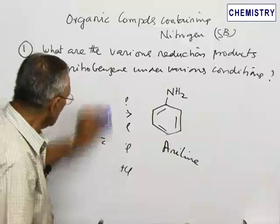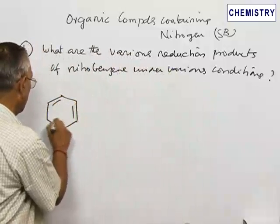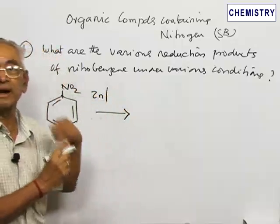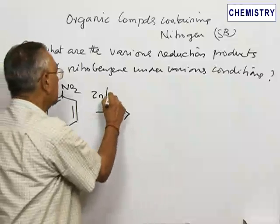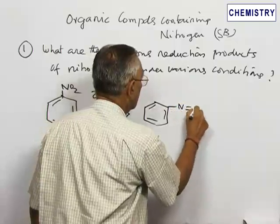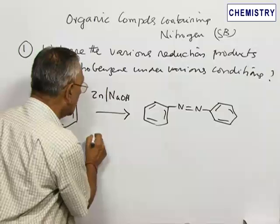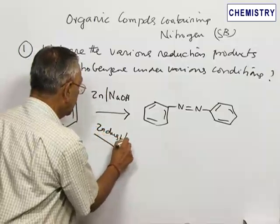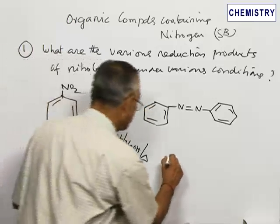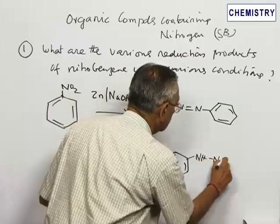The second condition: the same nitrobenzene can be reduced in alkaline medium instead of acid medium. Zinc metal can be used, since zinc liberates hydrogen in both acid and alkaline conditions. When treated with sodium hydroxide solution, nitrobenzene gives rise to a compound known as azobenzene. Under strong heating conditions with zinc dust and sodium hydroxide, it is further reduced to give hydrazobenzene.